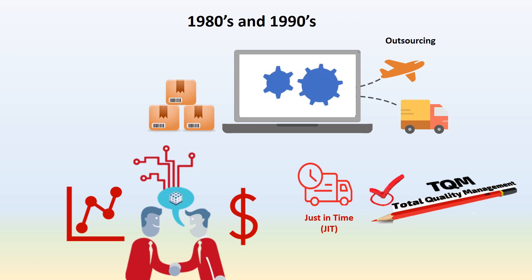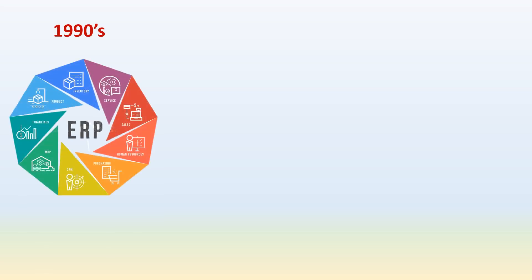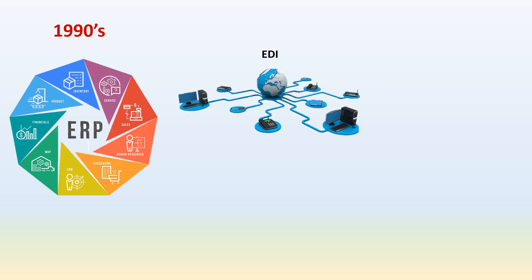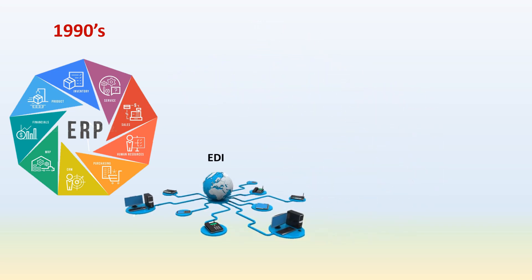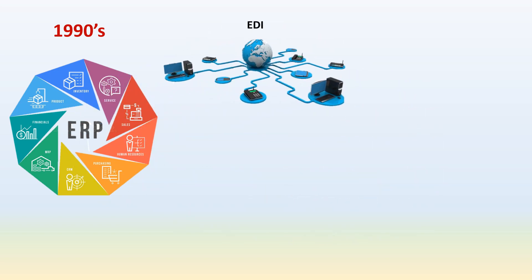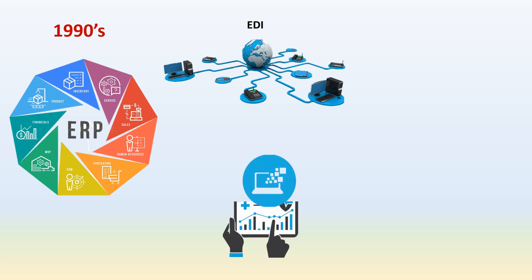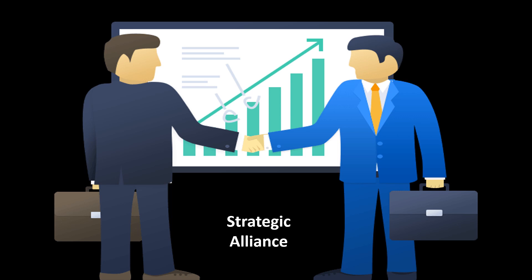In the 1990s, the introduction of enterprise resource planning tools gave a boost to the evolution of supply chain management. Information technology aspects like EDI, or electronic data interchange, along with ERP, played a vital role in connecting different channels within and outside organizations. ERP evolution continued into the 21st century with the development of more sophisticated IT systems. The buyer-supplier relationship moved one step forward, from normal partnership to long-term relationships and strategic alliances.